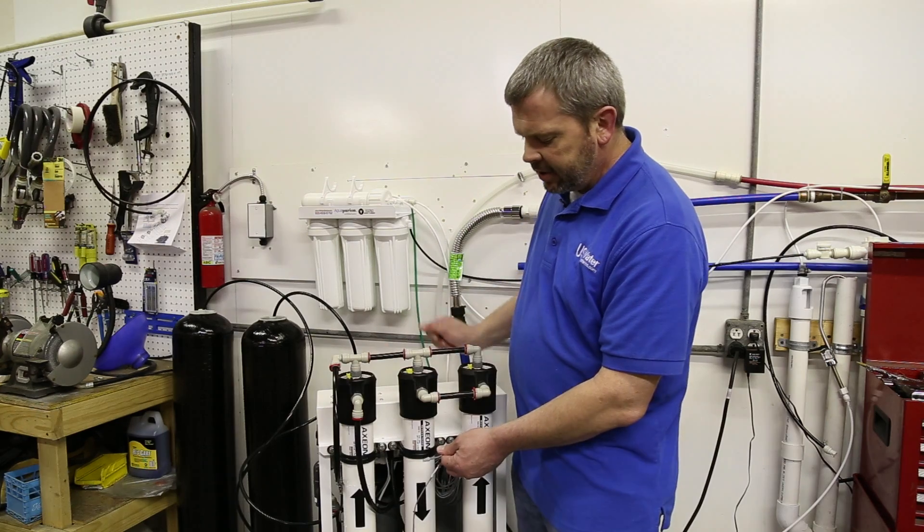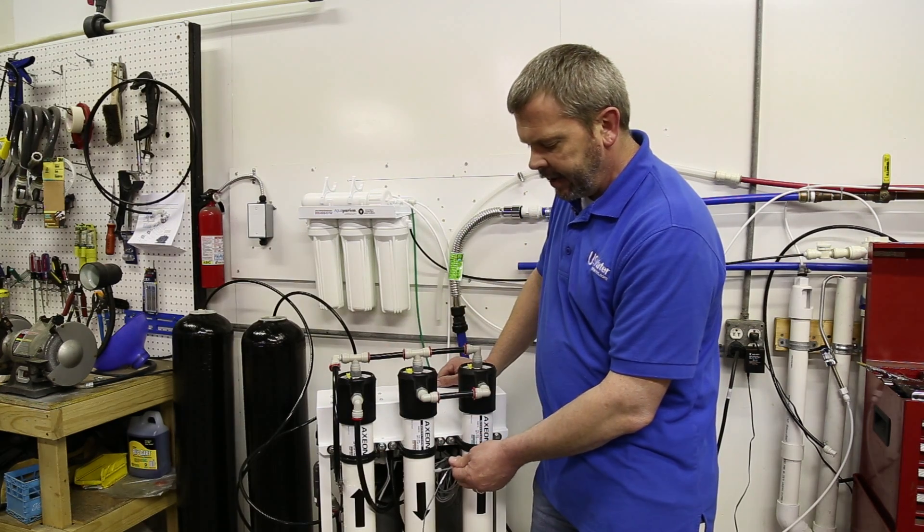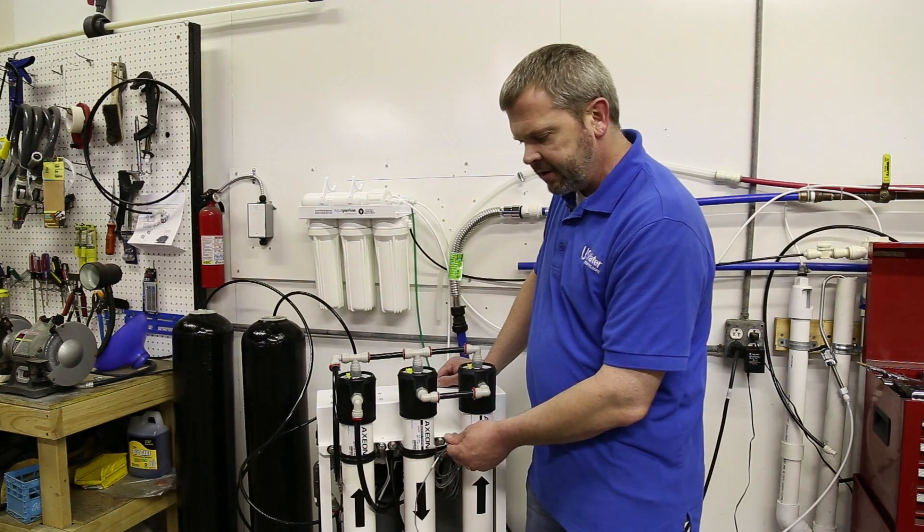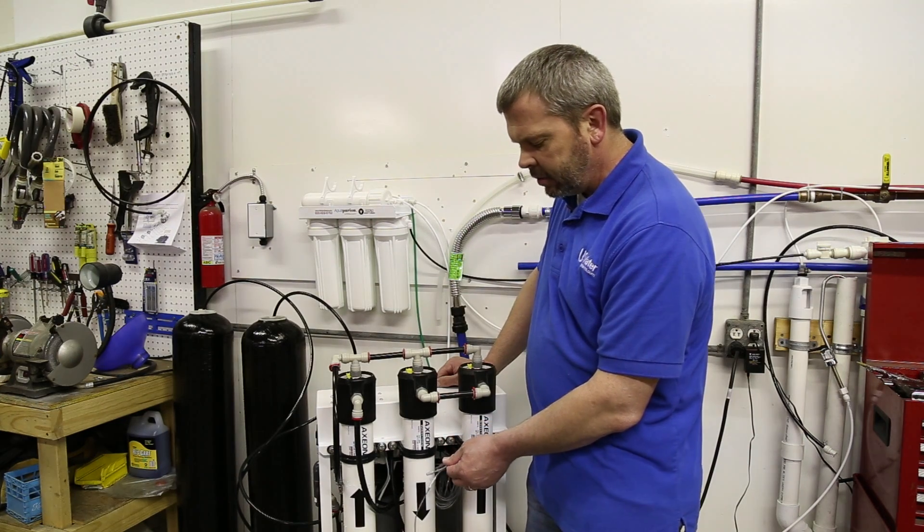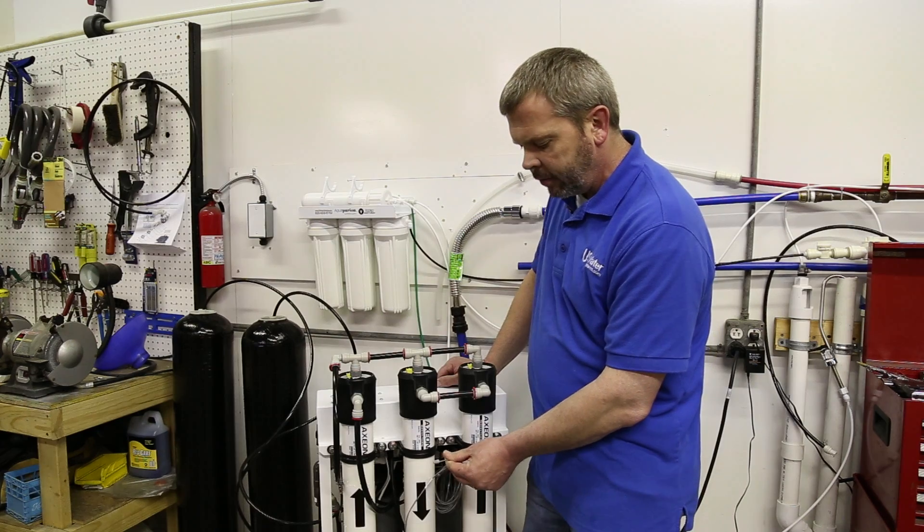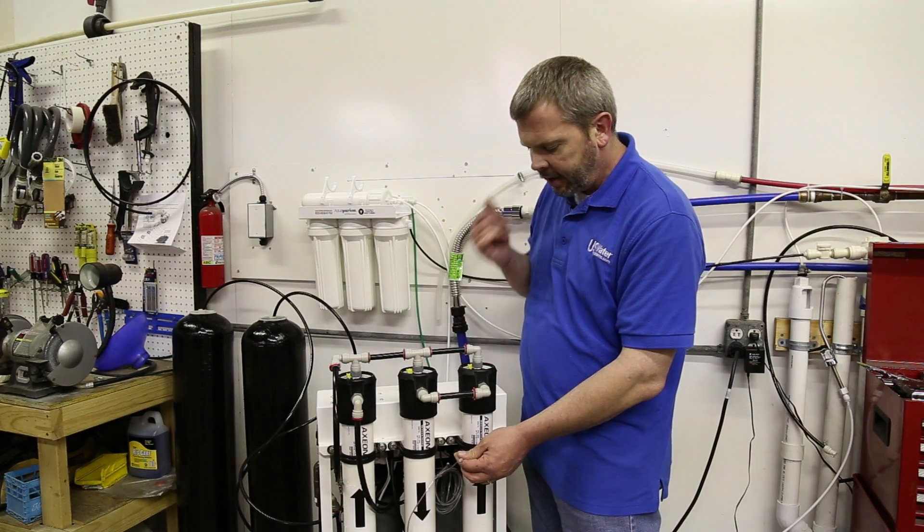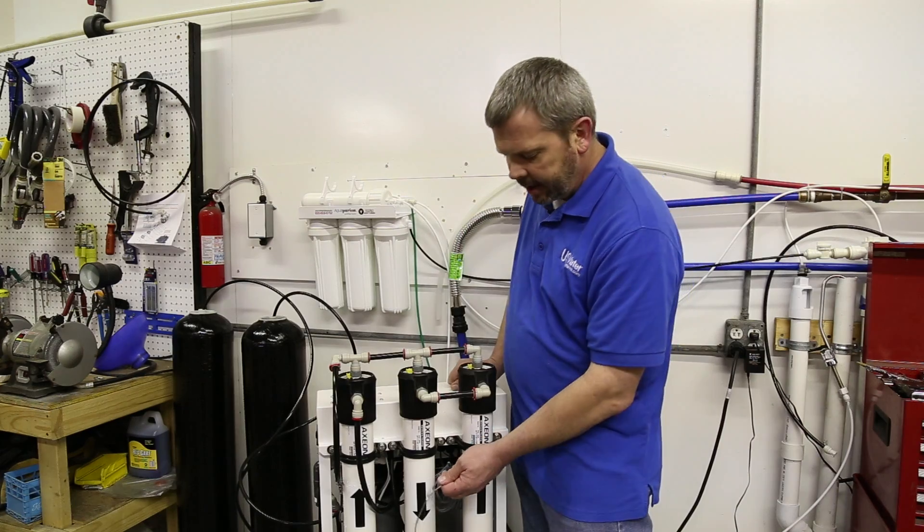So there usually is some type of a micro switch or maybe an auxiliary relay or something like that that you can use to turn this RO on and off whenever one of your pre-treatment items are actually backwashing or regenerating.